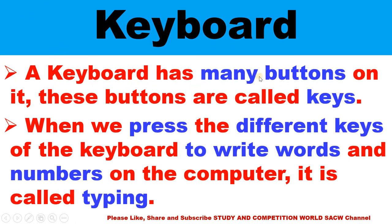A keyboard has many buttons on it. These buttons are called keys. If anybody asks you what are keys, you will answer: a keyboard has many buttons, and those are called keys. When we press the different keys of the keyboard to write words and numbers on the computer, it is called typing. If you want to type anything, you will press the alphabet key or numeric key on the keyboard.